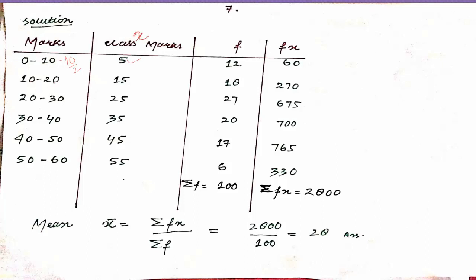For 20 to 30: 20 plus 30 is 50, divided by 2 equals 25. For 30 to 40: 70 divided by 2 equals 35. This is how you calculate your x for each interval. The frequencies are already given in the question, so you don't need to calculate them. This is what you had to find for this type of question.